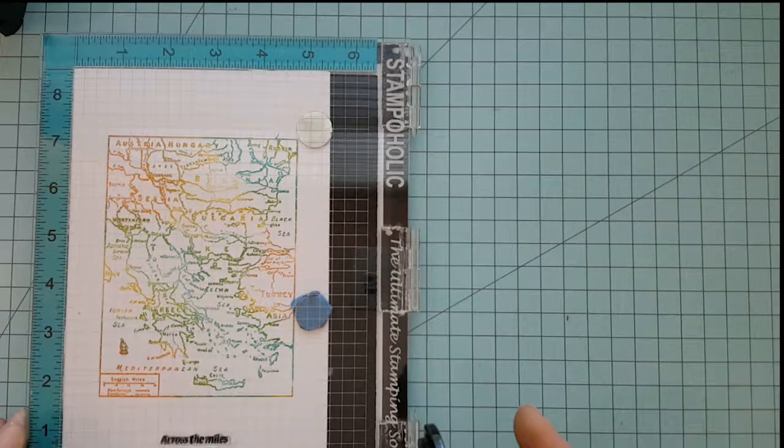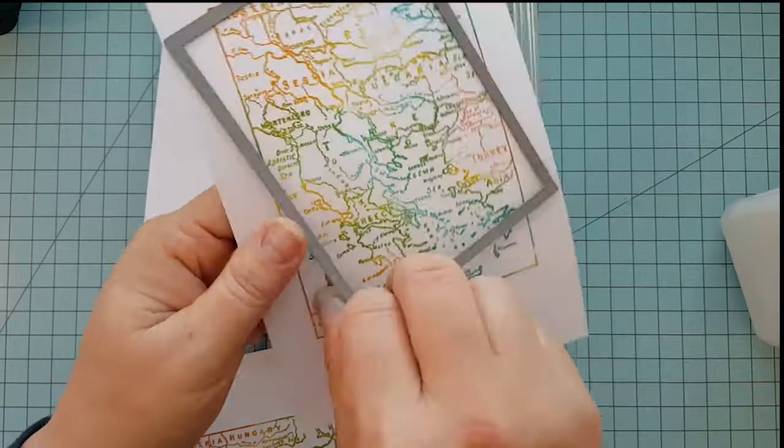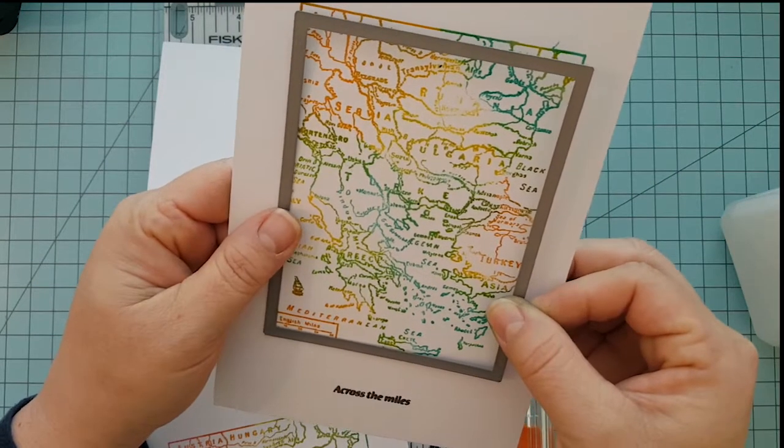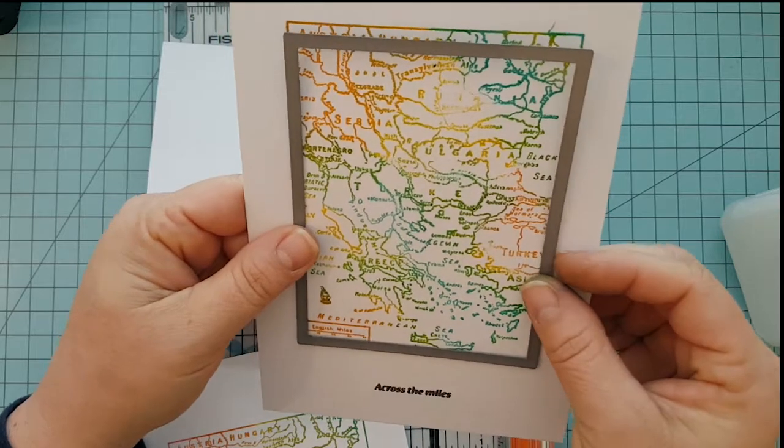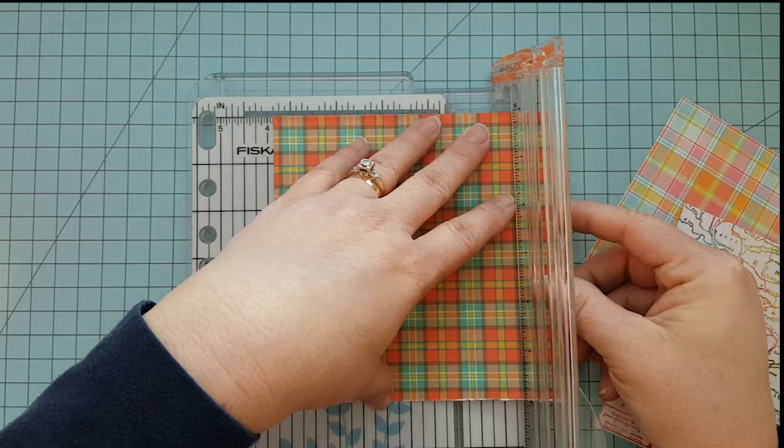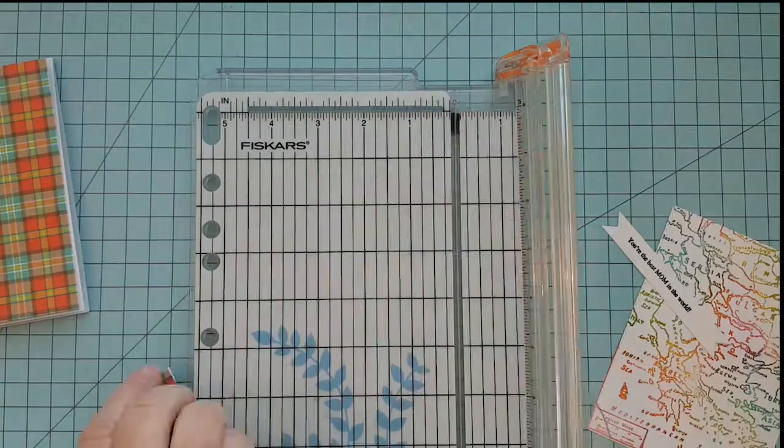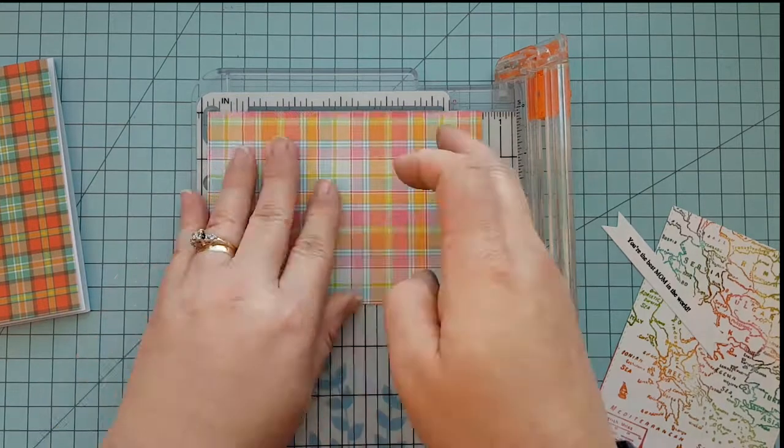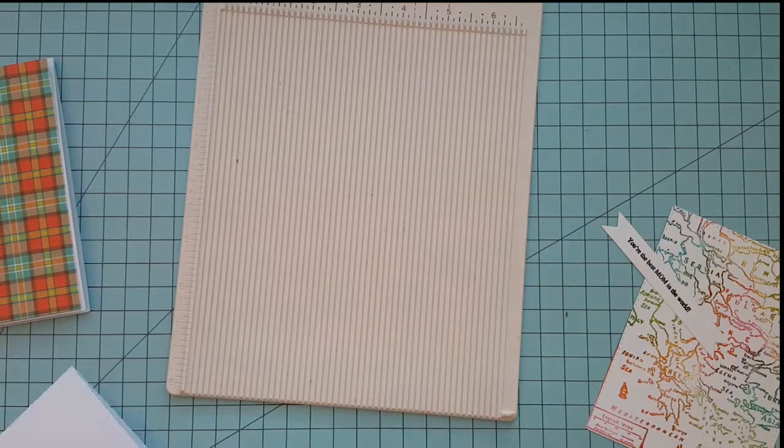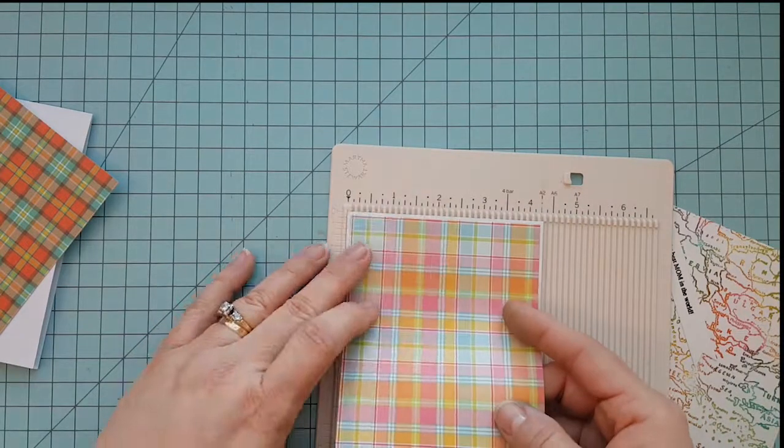So once we have that done, the next step is up to you. You can cut this with your paper cutter to keep that border around it. I chose to use a stitched rectangle die from Simon Says Stamp to die cut mine. And it does cut that border off, but I was okay with that because to me it gave it a little bit of a cleaner look, and I like that. So I'm going to go ahead and cut my plaid papers at 4 1/8 of an inch and 5 3/8 of an inch. I die cut my banners with a banner die cut.